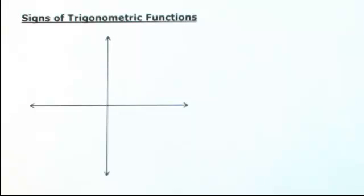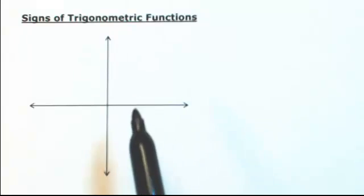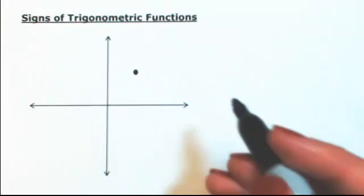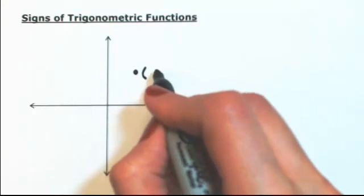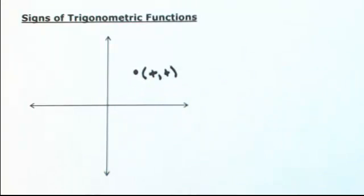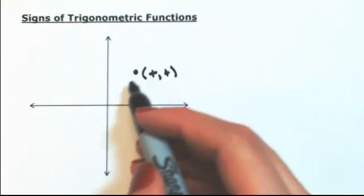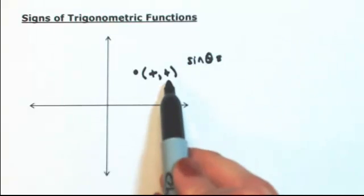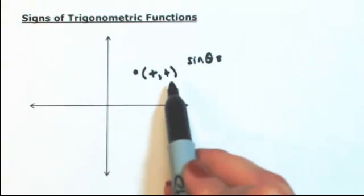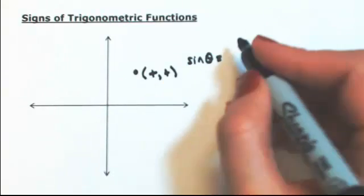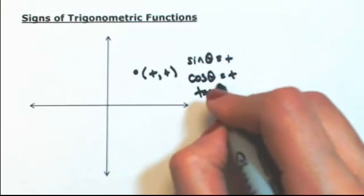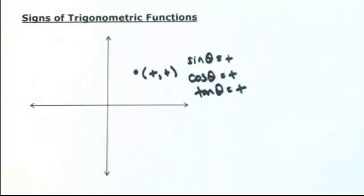Let's look at the sign of each trig function in each quadrant. If we have an angle in the first quadrant, a point on the terminal side of that angle would have a positive x-coordinate and a positive y-coordinate. So the sine of an angle in this quadrant — y over r, opposite over hypotenuse — is positive. Same thing with cosine, same thing with tangent. Everything is positive in the first quadrant.